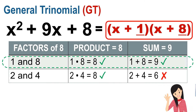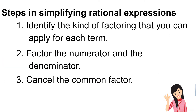That was just a recall. If you forgot these factoring methods, you may watch or read the lessons again. Now, let us proceed to simplifying rational expressions. The steps are: first, identify the kind of factoring you can apply for each term; second, factor the numerator and denominator; and third, cancel the common factors.